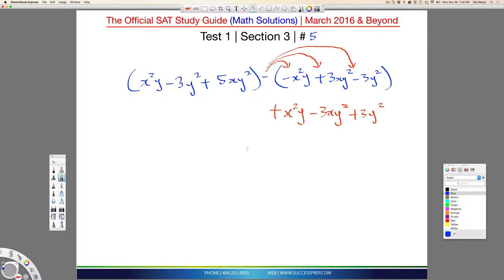So nothing has changed with the front part. This is still x squared y, this is through minus 3y squared plus 5xy squared. So at this point, you now pretty much kind of combine everything together.